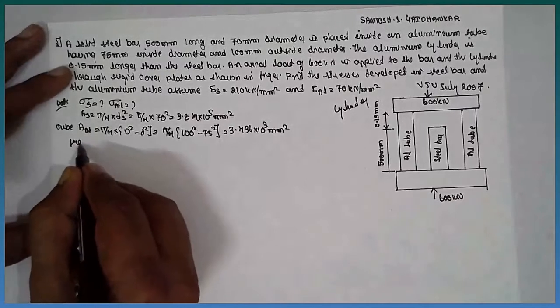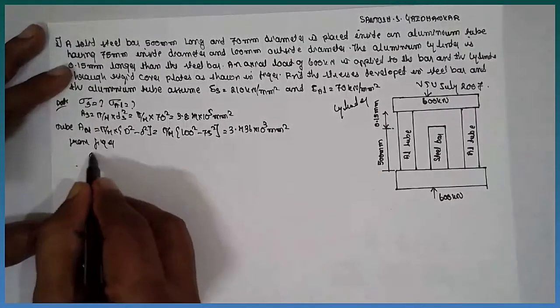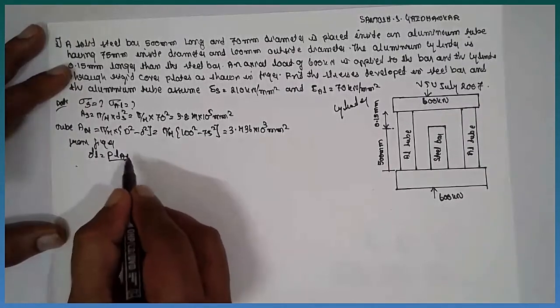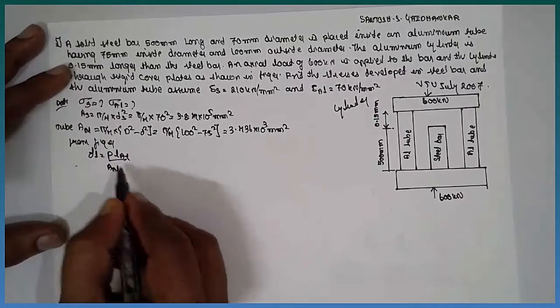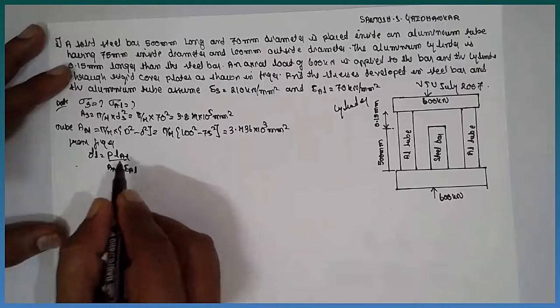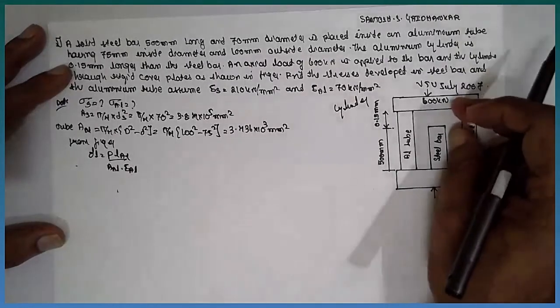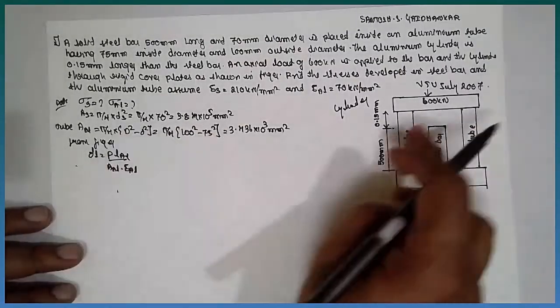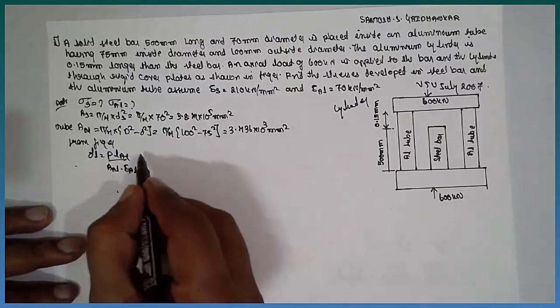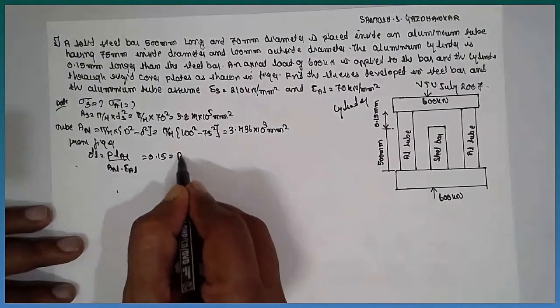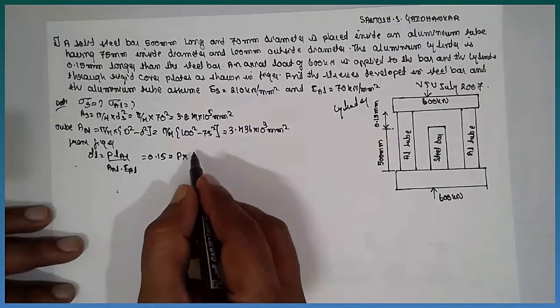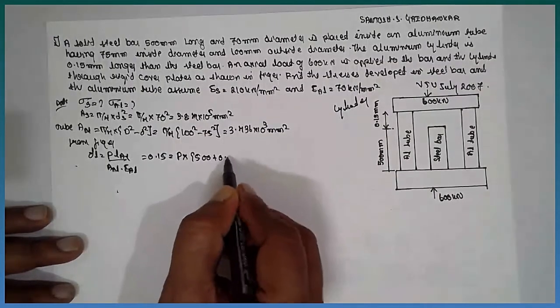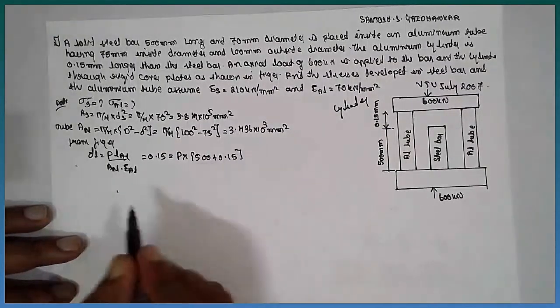Then, from figure, delta L equals P AL divided by A AL into E AL. Because we do not know, as it reaches, the load will get reduced and they are equally distributed. Therefore, you have to find out the P value. Delta, already they have given it here. 0.15 is equal to P is unknown into length. The length is 500 plus 0.15.